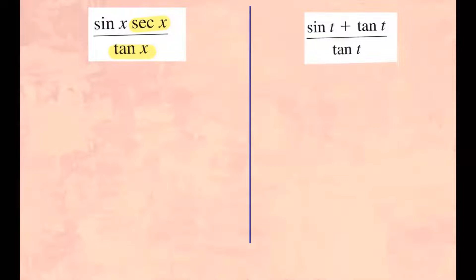So secant, we know that's 1 over cosine. So I have sine x times 1 over cosine x all over tangent. I can write that as sine over cosine. Now here, I can multiply this with 1. So that gives me sine over cosine.